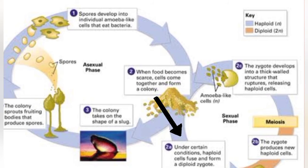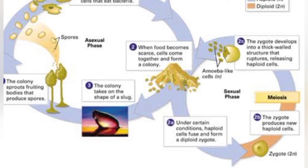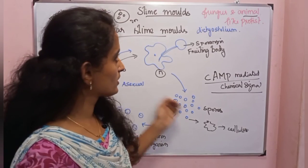Under certain conditions, haploid cells fuse and form a diploid zygote. The diploid zygote produces new haploid cells through meiosis. The zygote develops into a thick-walled structure that ruptures, releasing haploid cells as amoeba-like cells — individual organisms. This is the complete life cycle of cellular slime molds.